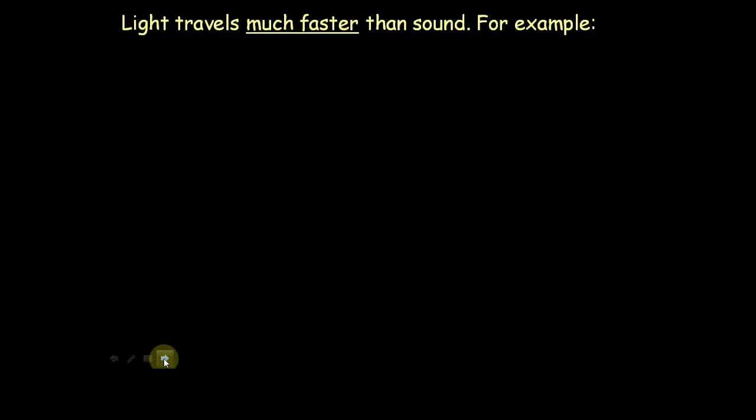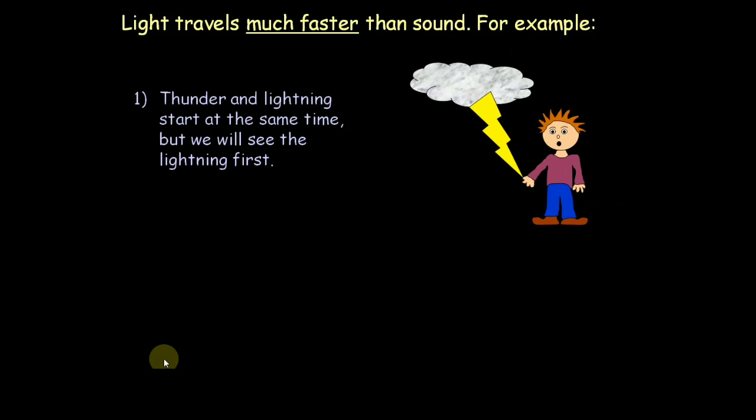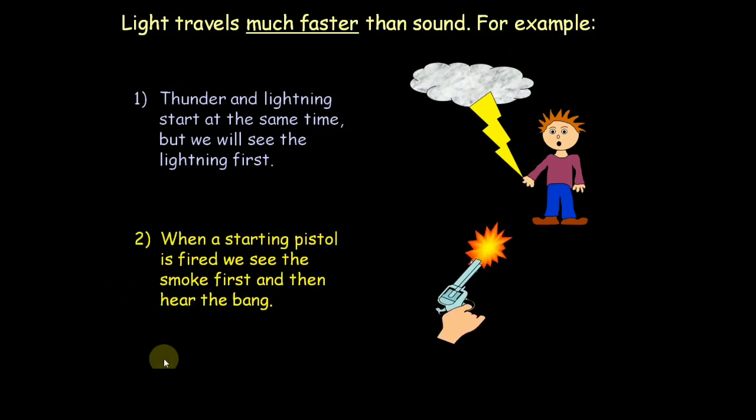Light travels much faster than sound. For example, thunder and lightning start at the same time but we will see the lightning first. When a starting pistol is fired, we see the smoke first and then hear the bang.